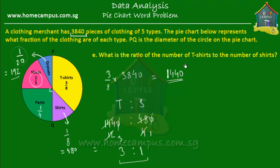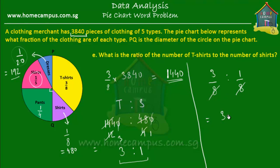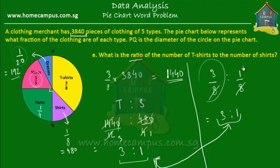There's another way to find this ratio without calculating actual numbers. Three eighths of all the clothing is t-shirts and one eighth is shirts. Since both fractions share the denominator eight, you can cancel the eights and you're left with 3 to 1 — the same answer. Whether you use actual numbers, fractions, or percentages, you get the same ratio because all that matters is the relation between the two quantities.